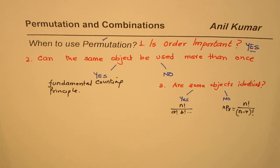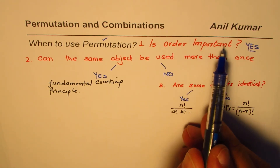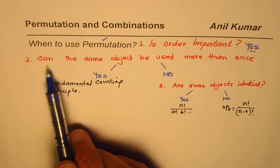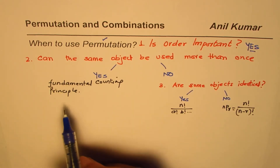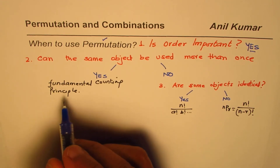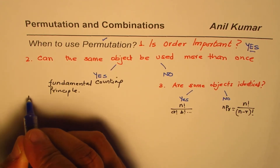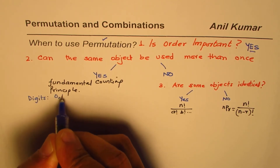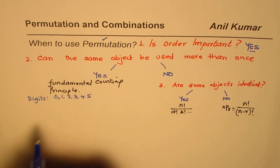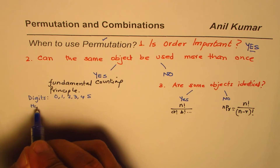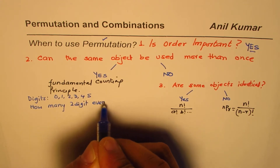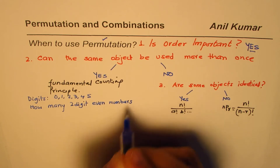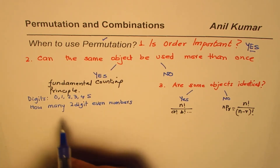Now let us take some examples to understand each technique. Since the order is important we are using permutation; the second question is can the same object be used more than once — and if the answer is yes, we use the fundamental counting principle. For example, consider the digits 0, 1, 2, 3, 4, and 5.